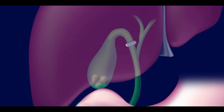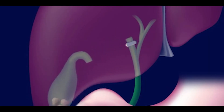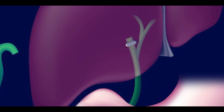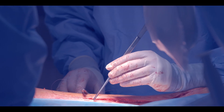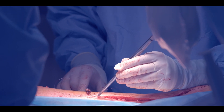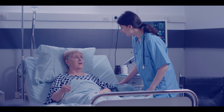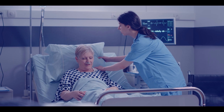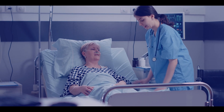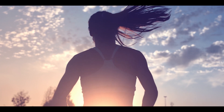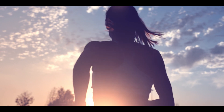The surgeon then uses a sharp surgical blade to remove the gallbladder, sutures the wound, and closes the abdominal incision with stitches or surgical glue. In open cholecystectomy, patients must stay three to four days in the hospital and avoid physical activities for several weeks to recover.